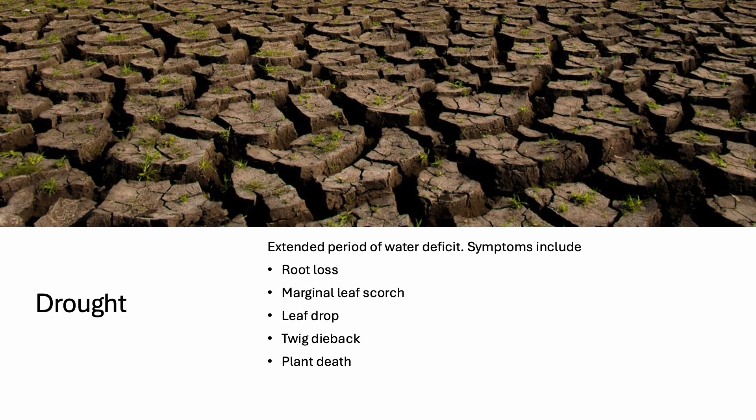Drought is a prolonged period of water deficit. Drought can cause root loss, marginal leaf scorch, leaf drop, and twig dieback. In extreme cases, it can even lead to plant death.